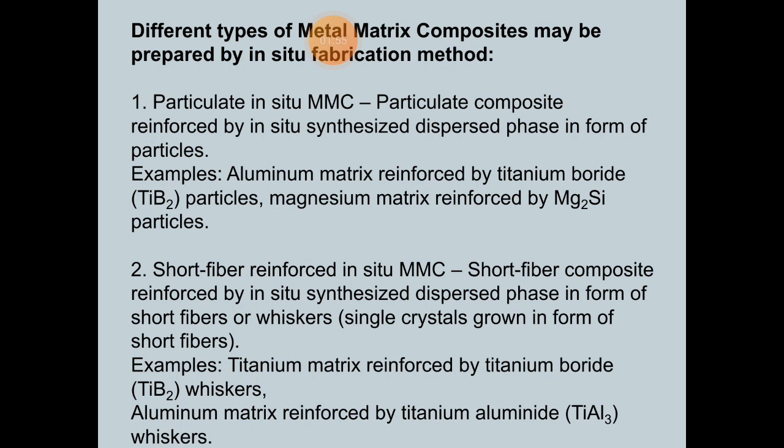The second type is short fiber reinforced in-situ MMCs — composites reinforced by an in-situ synthesized dispersed phase in the form of short fibers, or whiskers (single crystals grown in the form of short fibers). Examples include titanium matrix reinforced by titanium boride (TiB2) whiskers, and aluminum matrix reinforced by Ti3Al whiskers.